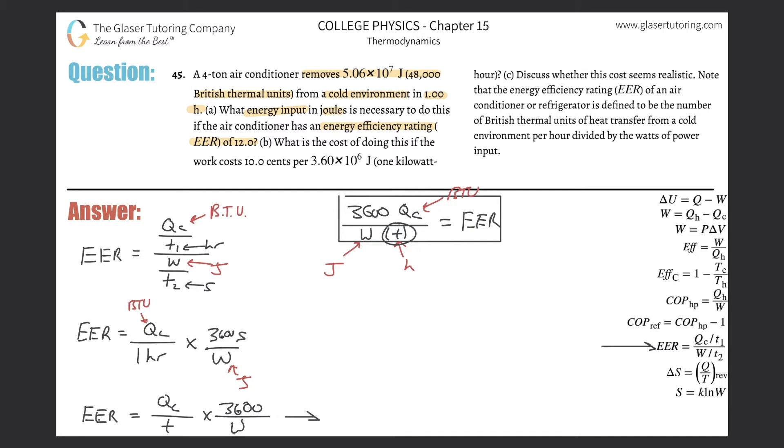They also told us the time in hours. Great, so they gave us the T down here, and they're asking us to find what energy input, and remember, I mentioned that the energy input here is going to be work, the W, and they want it in joules, and that's great, because that's what the formula will spit out for me anyway.